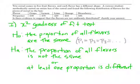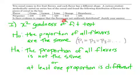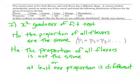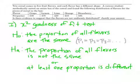Here's our first chi-squared goodness of fit example. Trick cereal comes in five fruit flavors, and each flavor has a different shape. A curious student methodically sorted an entire box of Trick cereal and found the following distribution of flavors for the pieces of cereal. The question is: is there evidence to suggest the flavors are not uniformly distributed? These numbers are all counts — number of pieces of cereal — and we have many different proportions. We're testing whether the proportion of grape equals lemon equals lime equals orange equals strawberry.